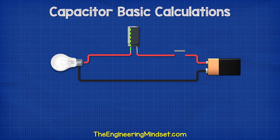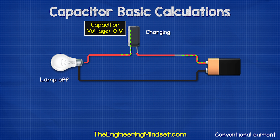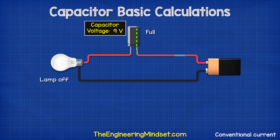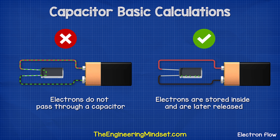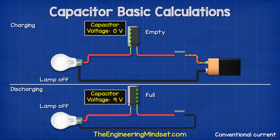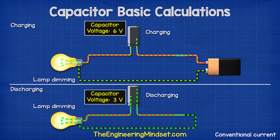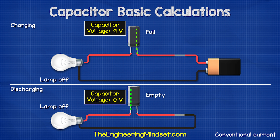If we placed a capacitor in series with a lamp, when we press the switch it will illuminate, but then becomes dimmer as the capacitor reaches the voltage level of the battery. Once it achieves this, the lamp will be off. Remember, electrons do not flow through a capacitor because of the insulating material inside. The electrons are simply accumulating on one of the plates, and as they accumulate they are rejecting an equal amount of electrons off of the opposite plate. So a current can only flow when the capacitor charges or discharges.